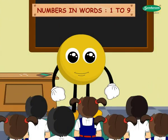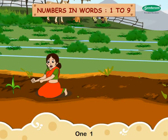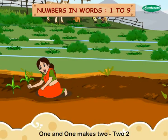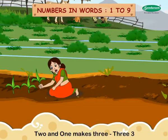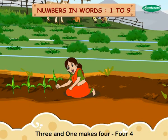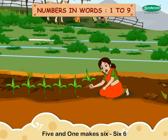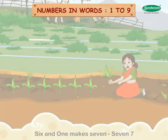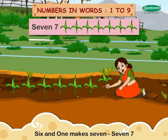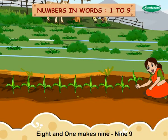Numbers in words one to nine. Let us count the plants. One and one makes two. Two and one makes three. Three and one makes four. Four and one makes five. Five and one makes six. Six and one makes seven. Seven and one makes eight. Eight and one makes nine. Very good.